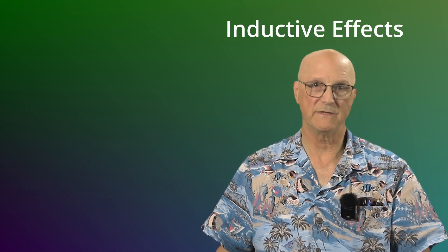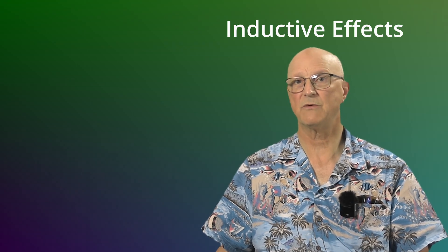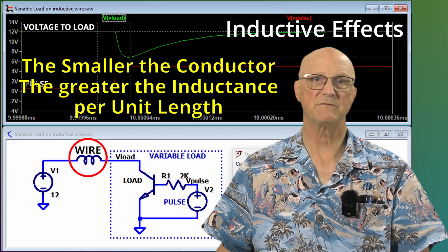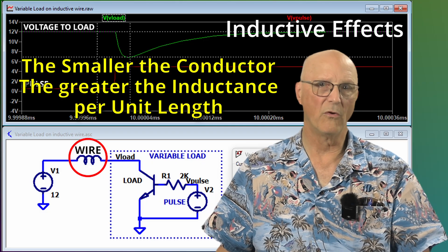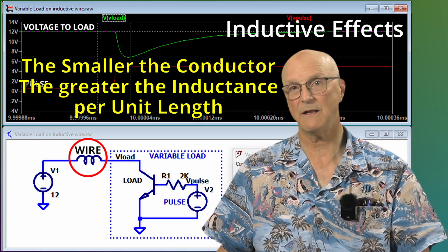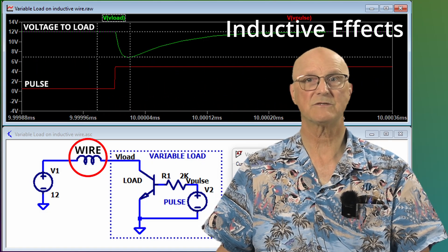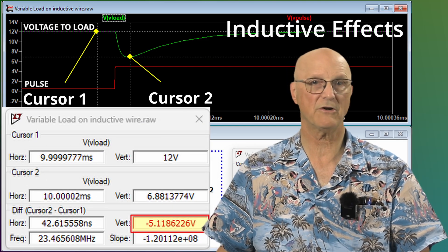Lastly, every wire is not only a resistor, but it is also an inductor. The smaller the conductor, the more inductance per unit length. Inductance resists changes in current.